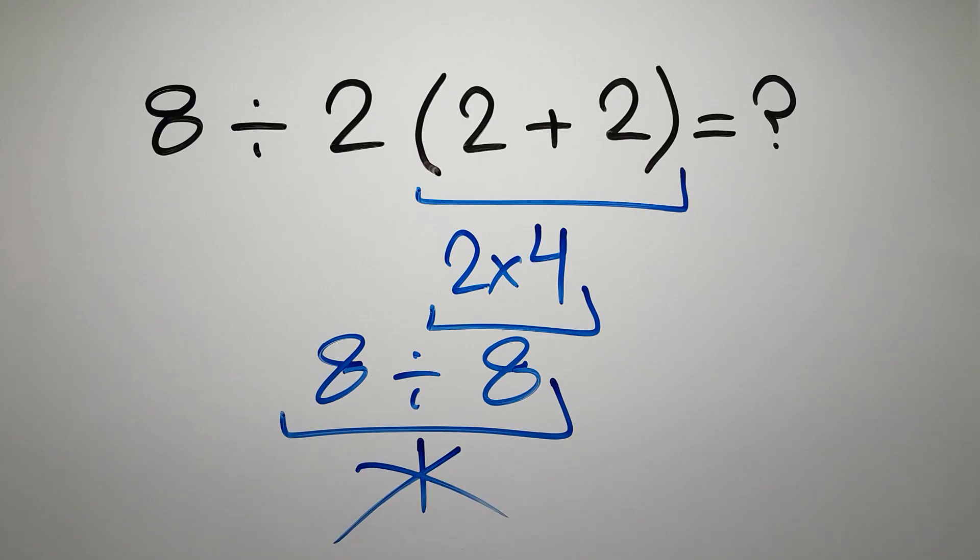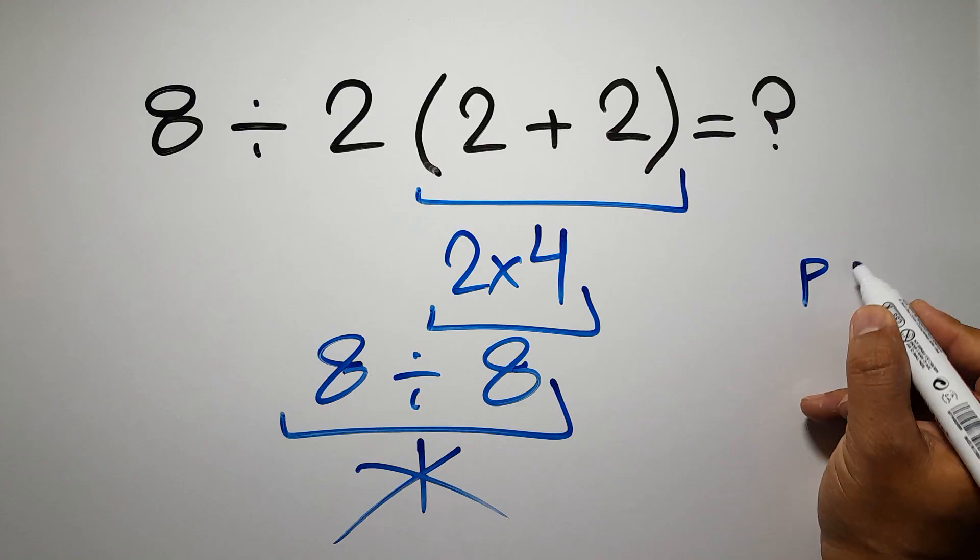But this answer is not correct, because according to the order of operations, first we have to do parentheses, then exponents, then multiplication or division.